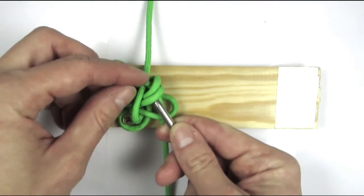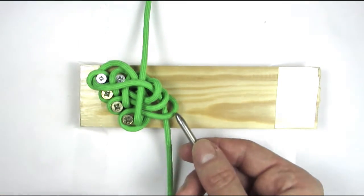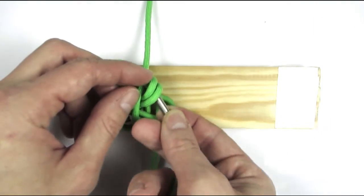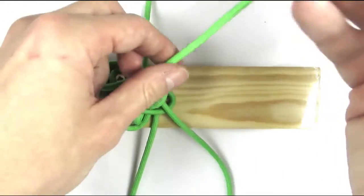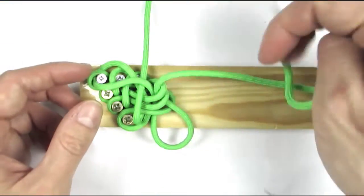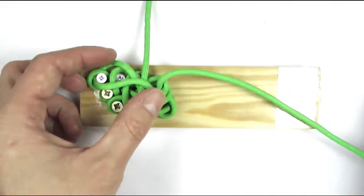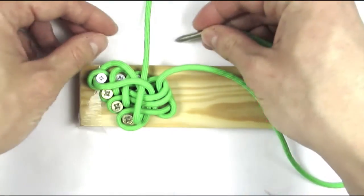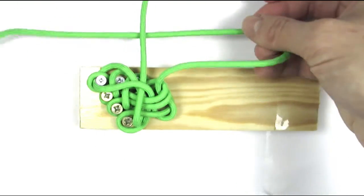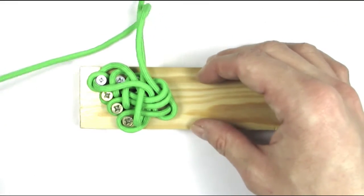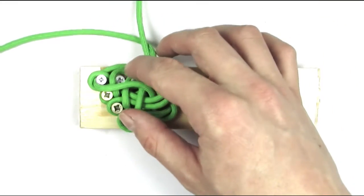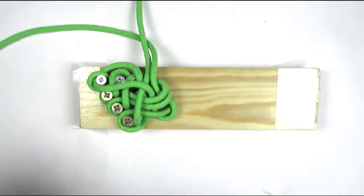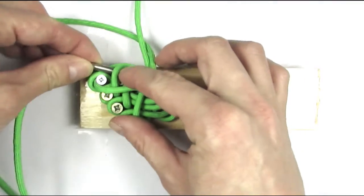We're now going to go to the top again, this time only through two loops. So under and through the two loops, then behind the top cord, and under and through the second loop at the top.